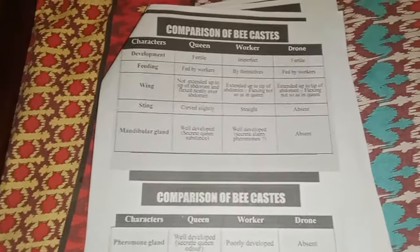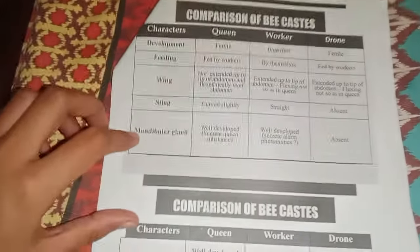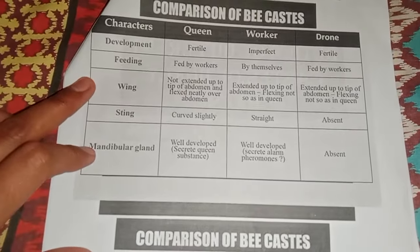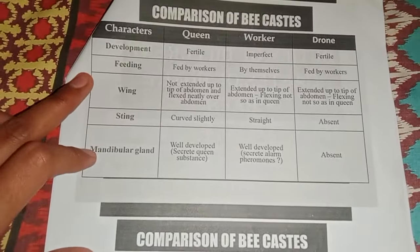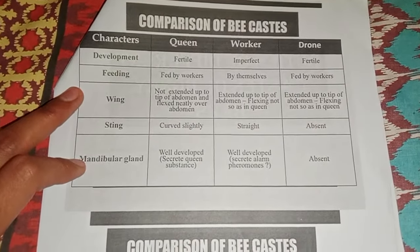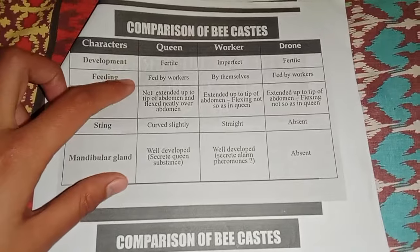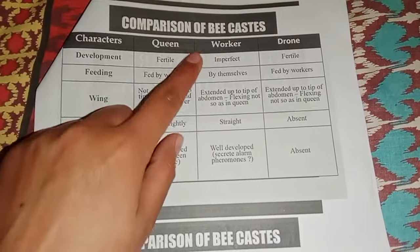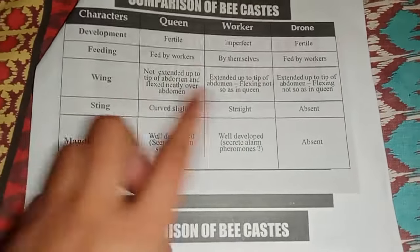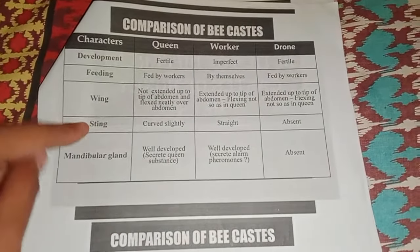In development, the queen is fertile, the worker is infertile, and the drone is fertile. If we talk about feeding, the queen is fed by the workers, the worker feeds itself, and the drone is fed by the worker, same as the queen.